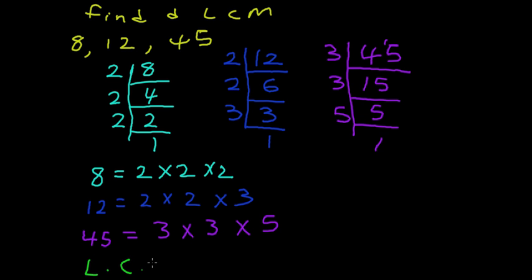The LCM. The factor of 2 is appearing 3 times here, 2 is appearing 2 times here. So we'll take the highest. So we're going to take 2 times 2 times 2.